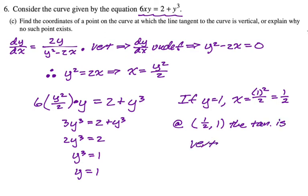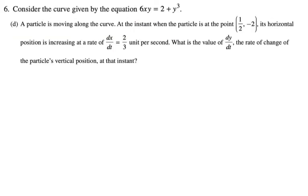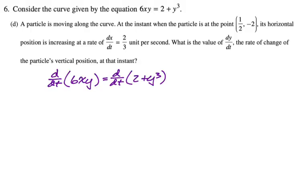There is one more part: a particle is moving along the curve, and at the instant when the particle is at the point (1/2, negative 2), its horizontal position is increasing at dx/dt equals 2/3 units per second. We need the value of dy/dt. Now we take d/dt of both sides. Using the product rule: 6x times dy/dt plus y times 6 dx/dt equals 3y squared dy/dt, since everything is a function of t.